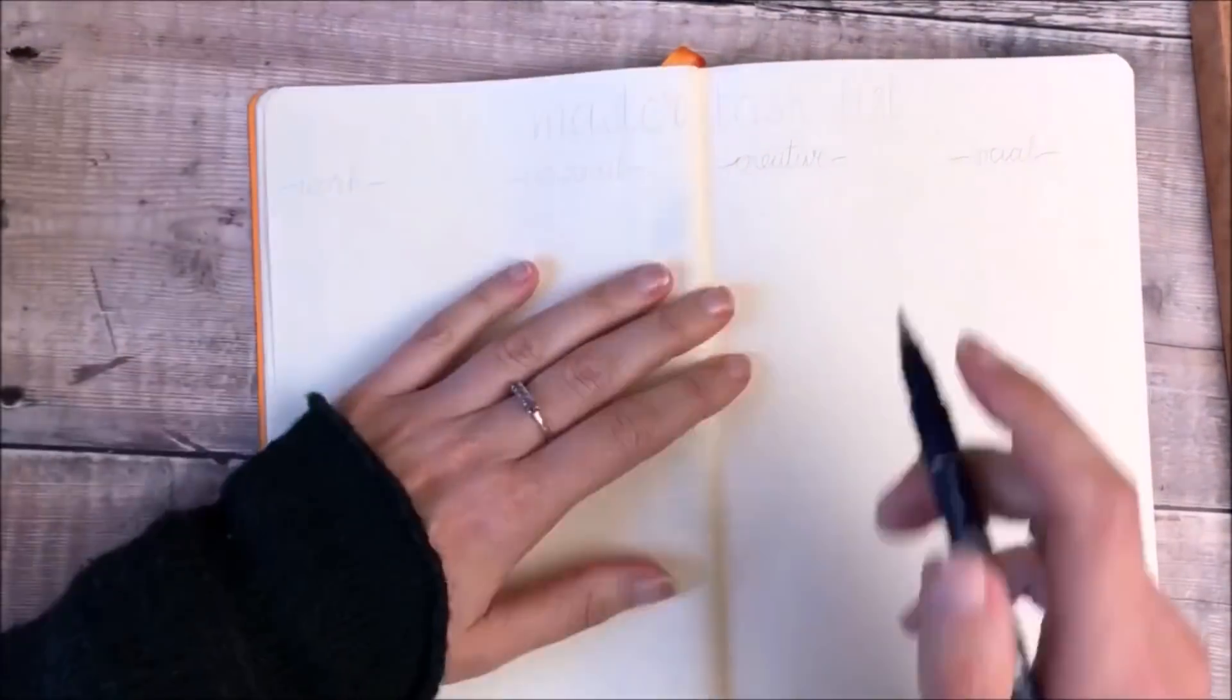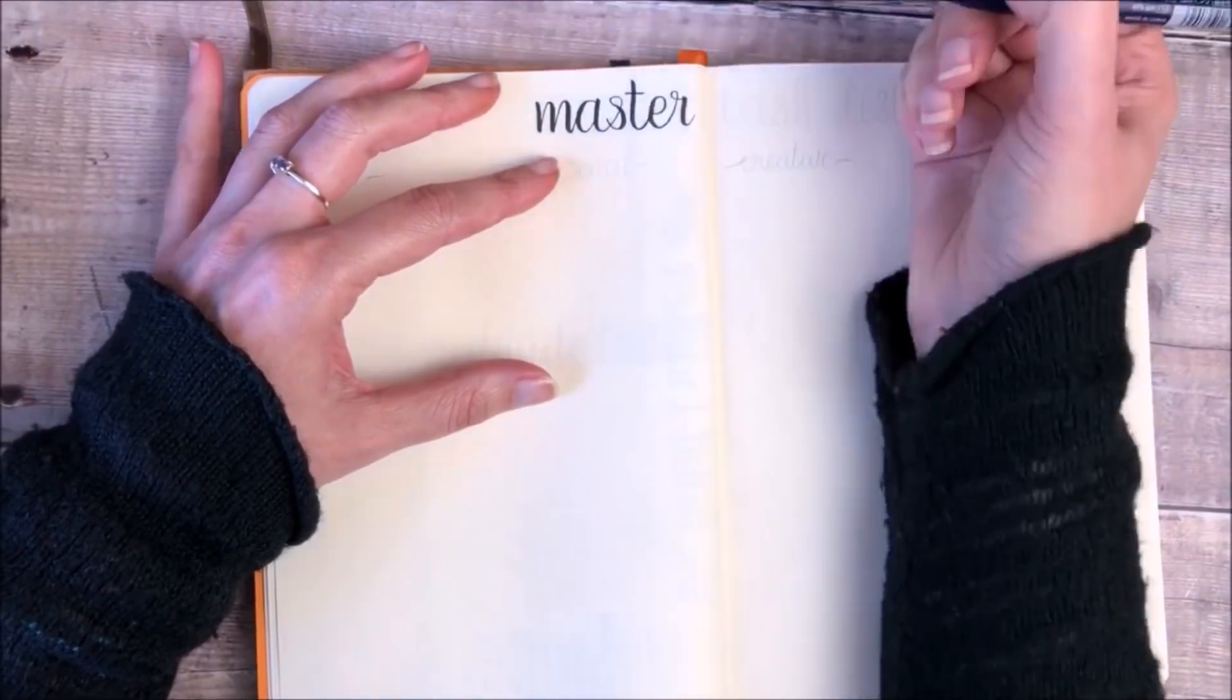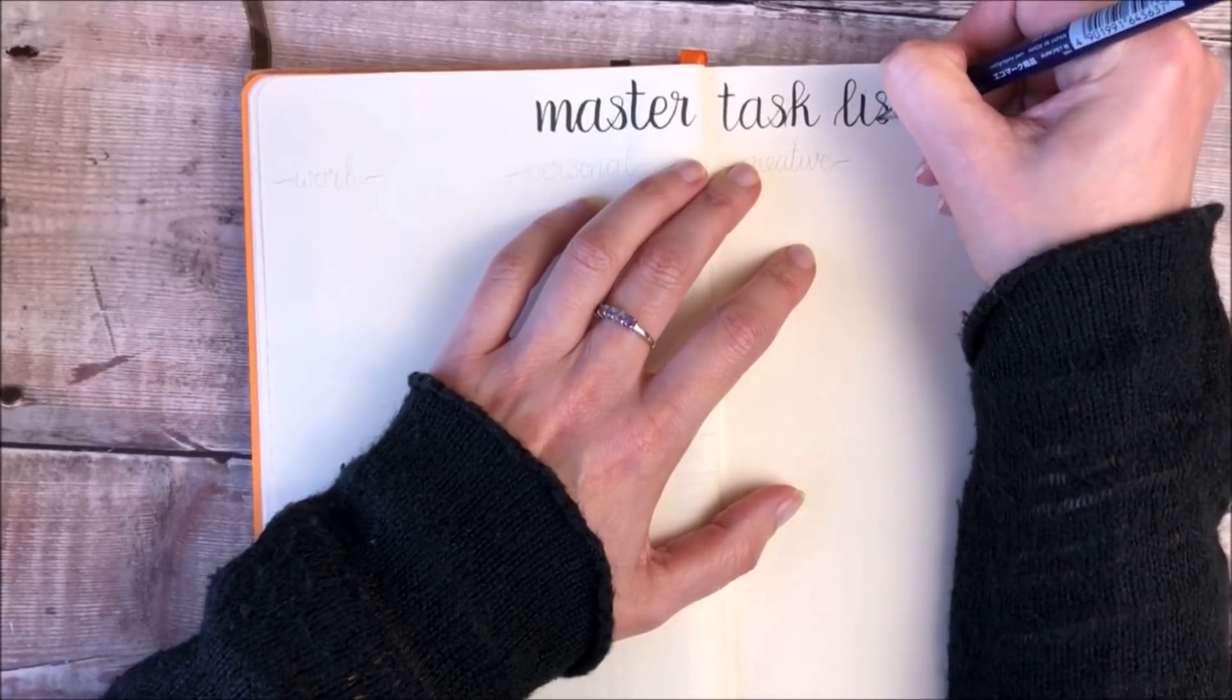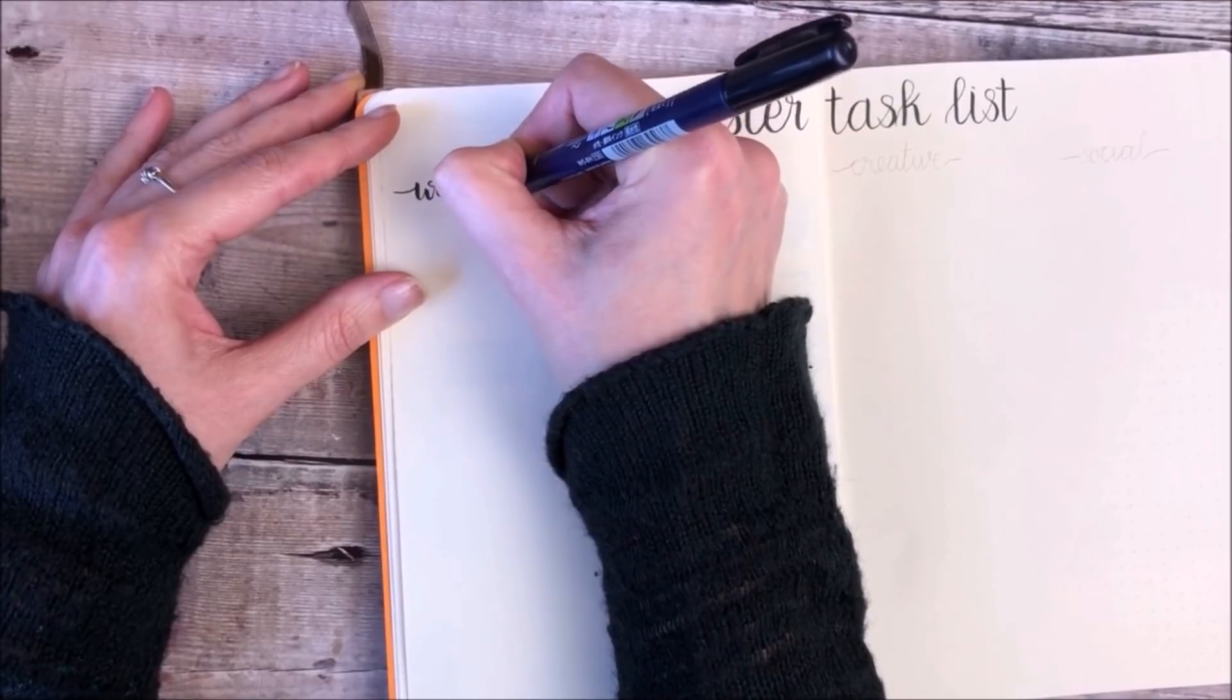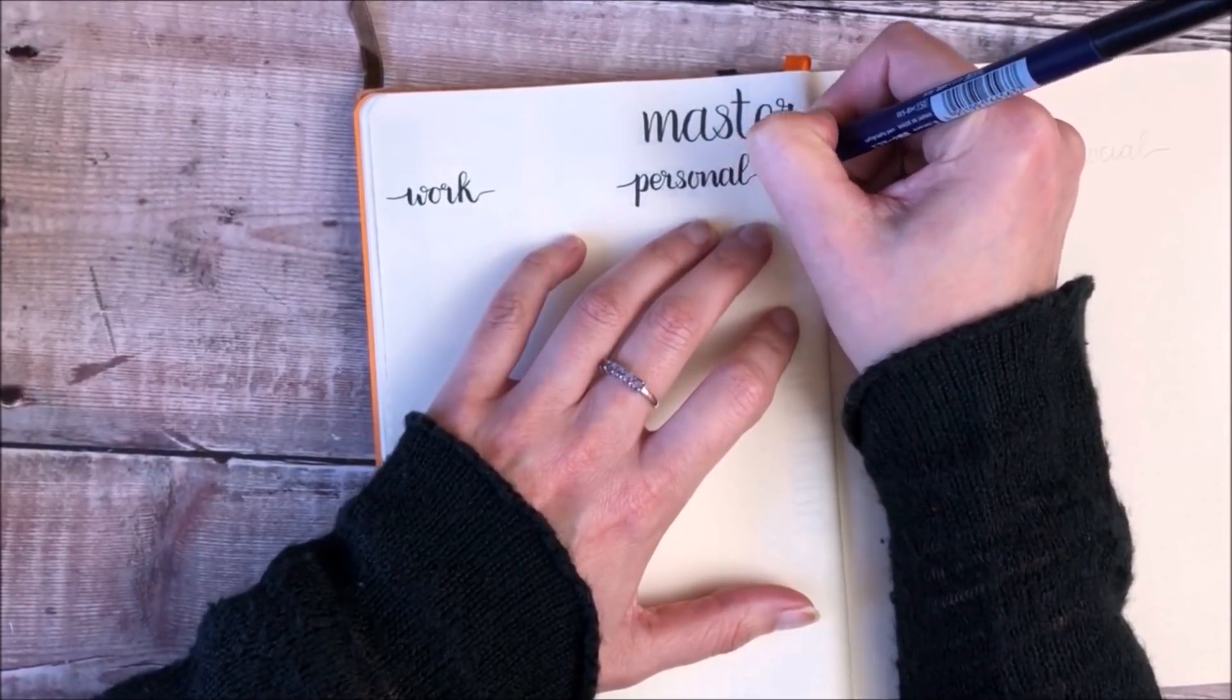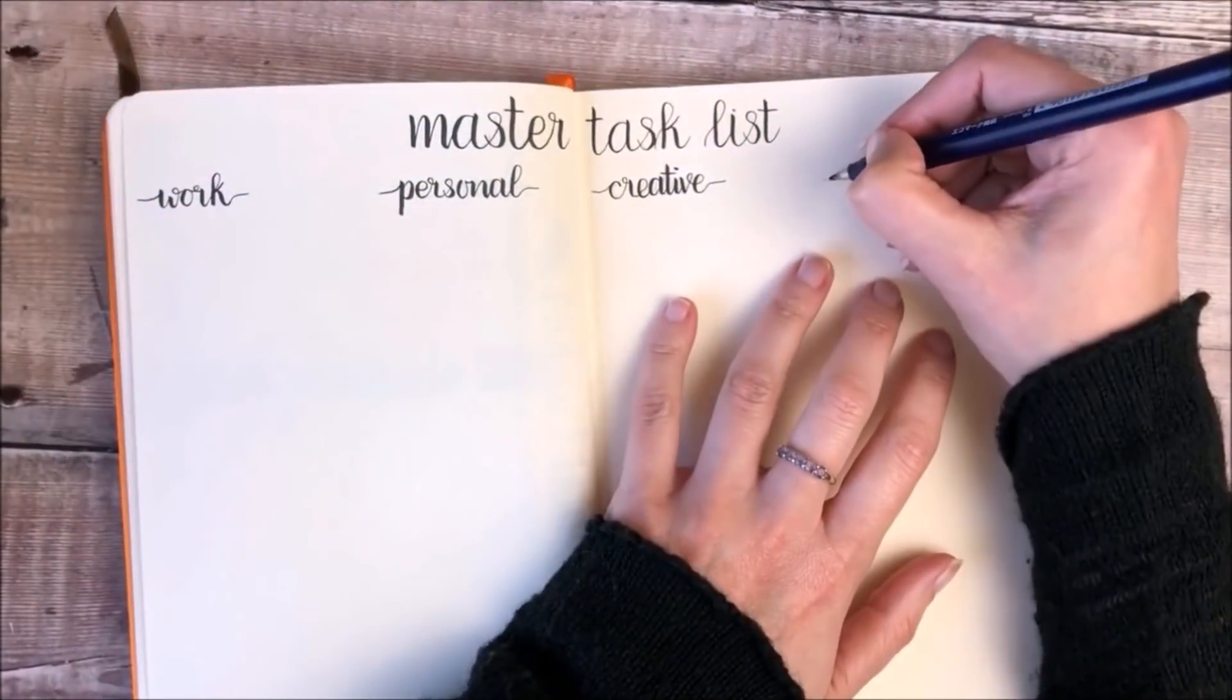With those done, the next pages I'm working on are for my master task list. I break this down into four different sections for work, home, creative projects and social media. This works really well for me. It's where I put down all of my tasks, a kind of a brain dump but in a more organised way because I put it under the categories so that I can easily find the tasks that I'm looking for and I can make sure that nothing gets forgotten.